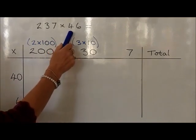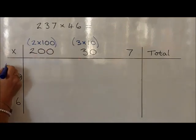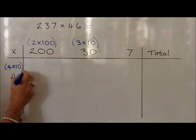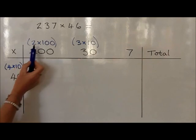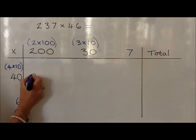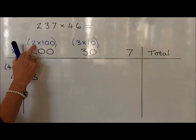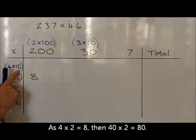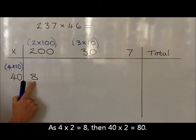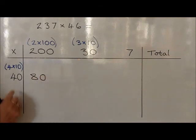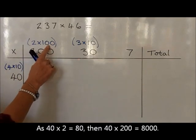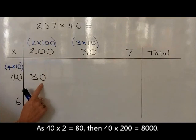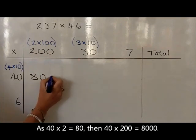We're now multiplying this all by 46. So we partition the 46: the 4 in the tens we write above as 4 times 10, and the 6 in the units we leave as 6 units. We start off by multiplying 4 times 2 and write the answer down as 8. For 40 times 2, the 40 is 10 times bigger than 4, so the 8 we make 10 times bigger, which is 80. For 40 times 200, the 200 is 100 times bigger than the 2, so our answer of 80 now becomes 100 times bigger, which is 8,000.